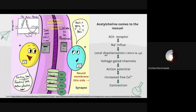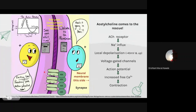Local depolarization means the normal voltage was breached — it increased from minus 70 millivolts upward due to influx of sodium ions. The potential moved from minus 70 to minus 40. When more acetylcholine was added, local depolarization occurred and the threshold potential of minus 40 was breached, causing voltage-gated sodium channels to open. The voltage-gated calcium channel also opened.